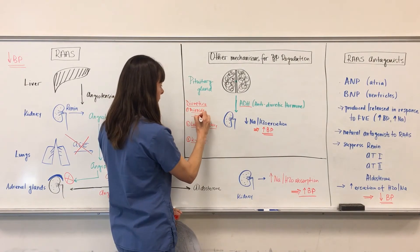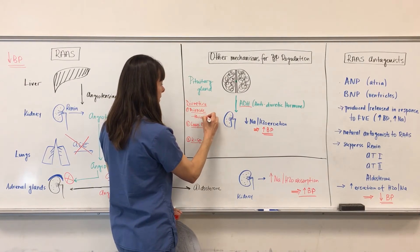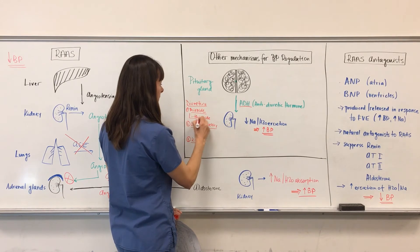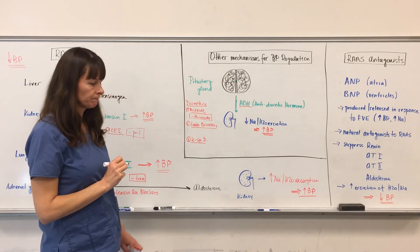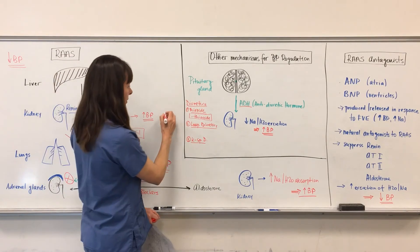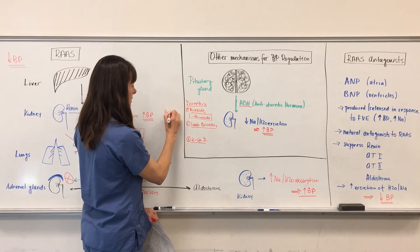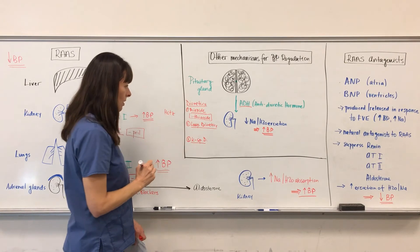So thiazide diuretics, very easy, end in thiazide, and probably the most prominent one would be hydrochlorothiazide. You'll see that very often abbreviated as HCTZ.